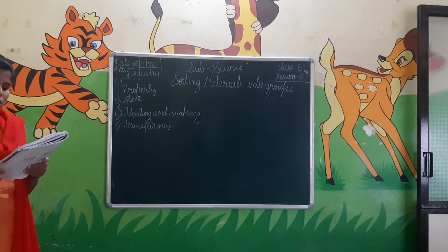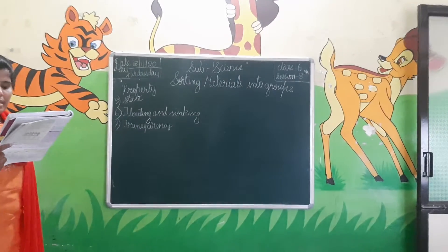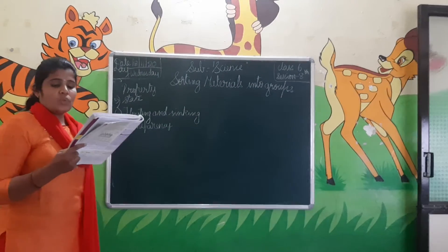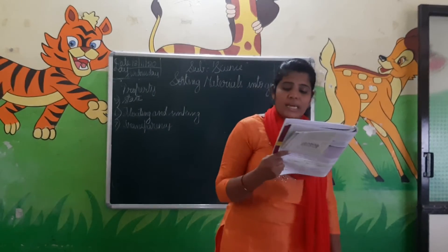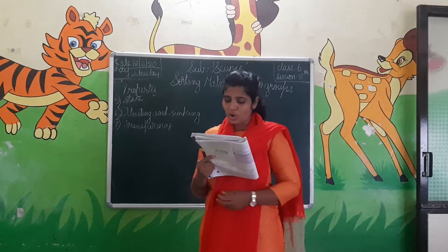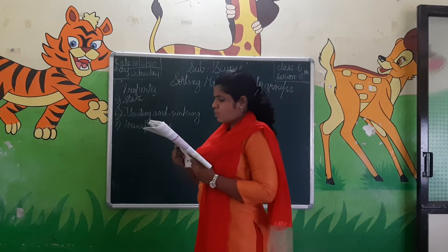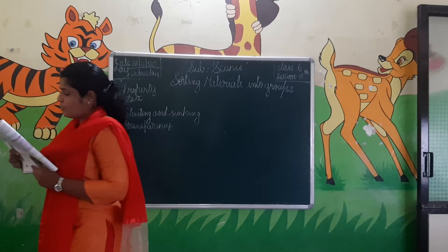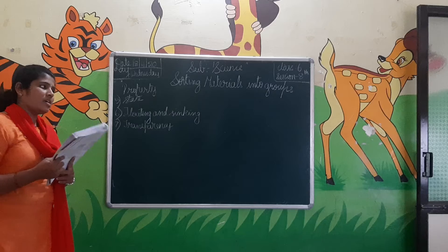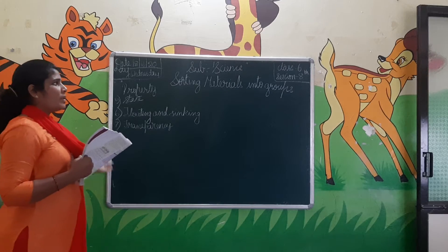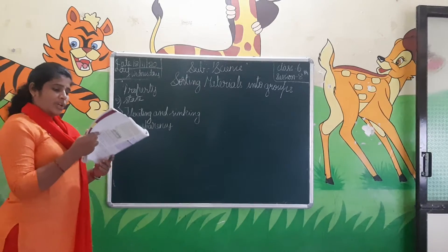The materials through which we can see objects clearly are transparent materials. The materials through which we cannot see objects are called opaque materials, and this property is called opacity. Metals, books, and cardboard are some examples of opaque materials.